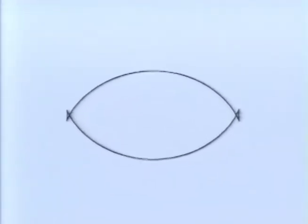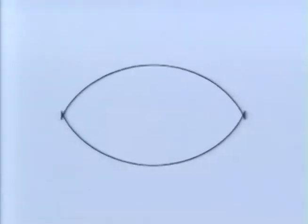Notice the cusps on the parallel curves. If light were emitted from the original curve, it would focus on each of those cusps. Some of these parallel curves look like ellipses, but in fact, no two non-circular ellipses can be parallel to each other.